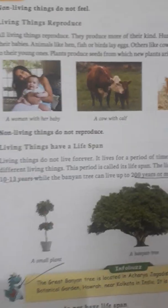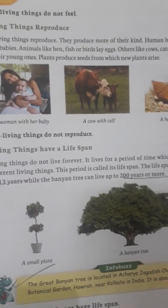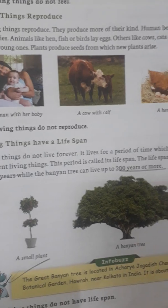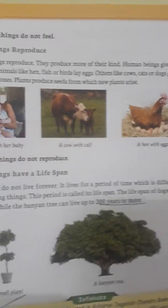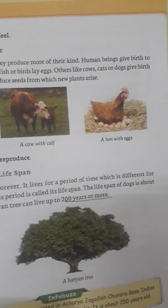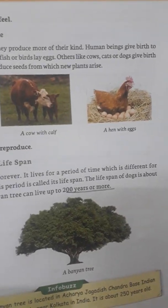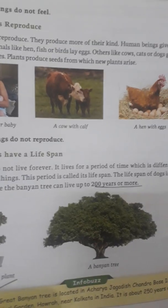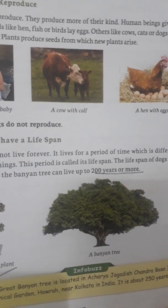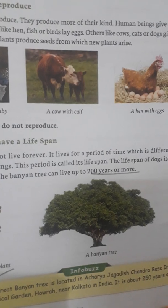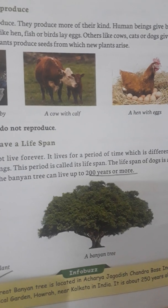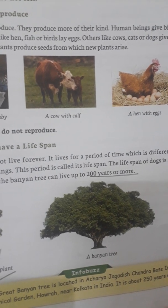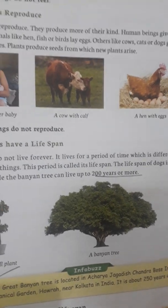Children, here we are on the third part of the lesson on living and non-living things. An important line: the lifespan of a dog is about 10 to 13 years — just mark and underline it. A banyan tree can live up to 200 years or more — just underline it. This infobuzz portion you have to take out.